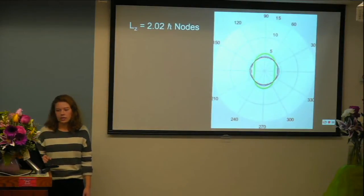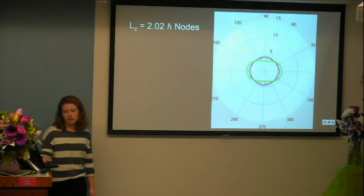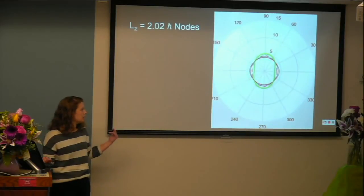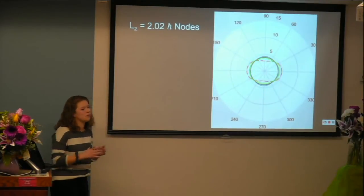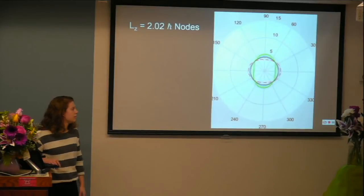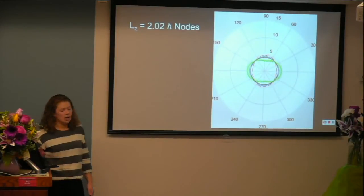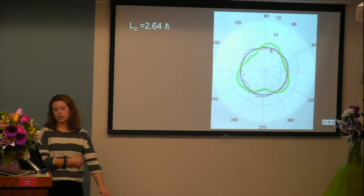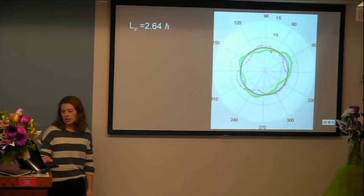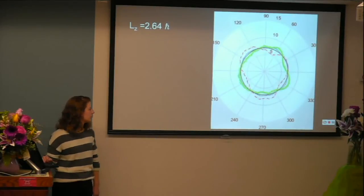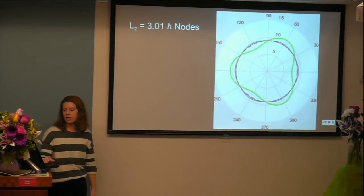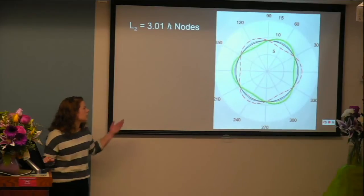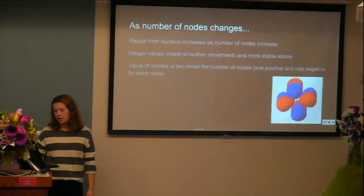The second one at 2.02 nodes — those movements are a lot more stable, and the combination of the red and green makes the blue line unmoving, so this electron is pretty stable. Then 2.64 nodes is unstable again because it's not an even integer. And finally, 3.01 nodes — the blue line is unmoving, so it's stable in its current condition.